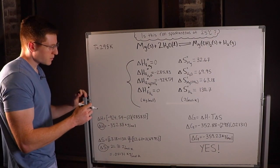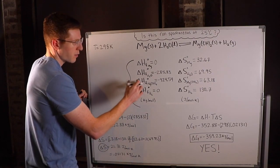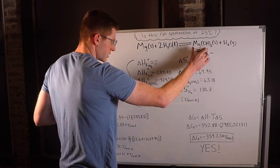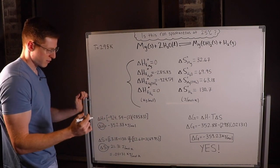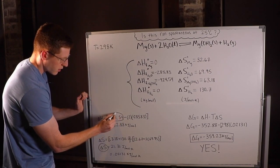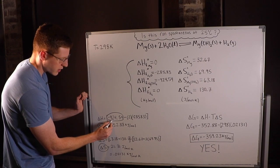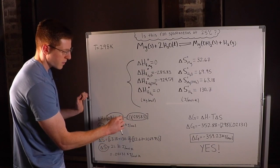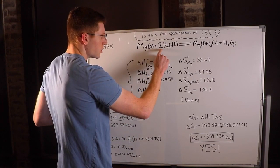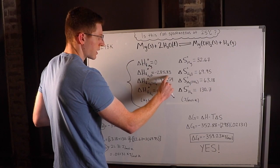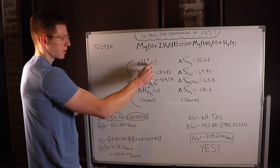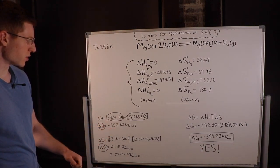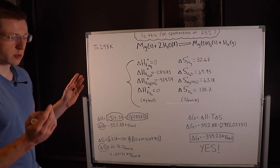The delta H for my products all added together is 0 plus negative 924.54. This is the delta H sum of my products. Then the delta H sum of my reactants is minus two times negative 285.83, and the zero doesn't contribute anything. So the overall delta H for this reaction is negative 352.88 kilojoules per mole—the units you'll generally be given for enthalpy.